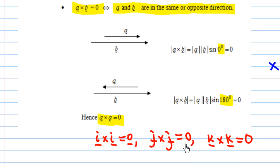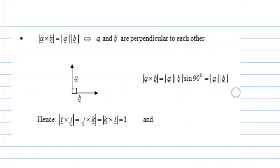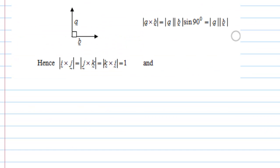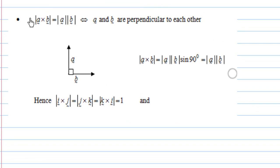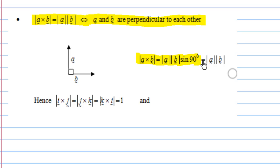Zero here means the zero vector. The next property is: if the magnitude of a cross b equals the magnitude of a times magnitude of b, then a and b must be perpendicular to each other. This is because when perpendicular, the magnitude of a cross b equals magnitude of a times magnitude of b times sine 90, and sine 90 is 1. So we know the magnitude of i cross j equals the magnitude of j cross k equals the magnitude of k cross i, all equal to 1.